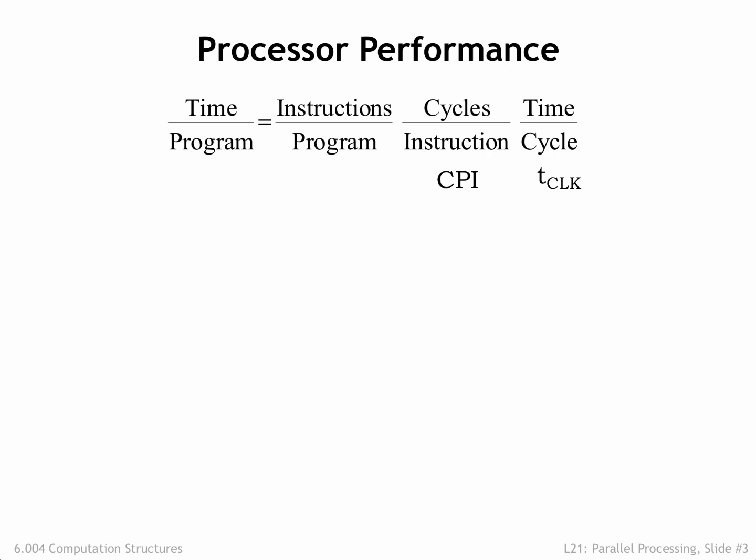The number of instructions per program is determined by the ISA and by the compiler that produced the sequence of assembly language instructions to be executed. Both are fair game, but for this discussion, let's work on reducing the other two terms. As we've seen, pipelining reduces t-clock by dividing instruction execution into a sequence of steps, each of which can complete its task in a shorter t-clock. What about reducing CPI?